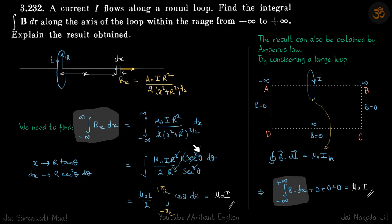You put the value of dx here and put the value of x here, and what you will get is mu naught i by 2 cos theta d theta.